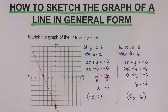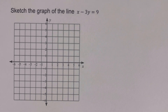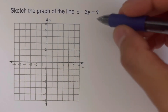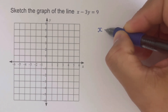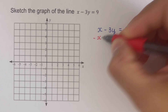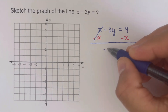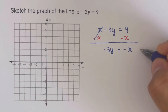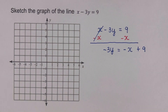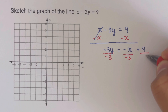The second method of sketching the graph of a line in general form is to convert it to slope-intercept form. That means we isolate y by itself. We subtract x from both sides, giving us negative three y equals negative x plus nine. Then we divide both sides by negative three to isolate y.